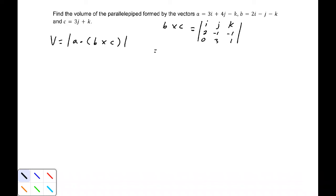So we'd have the minor matrix of -1, -1, 3, 1 times i, minus the determinant of the matrix 2, -1, 0, 1 times j, plus the minor matrix 2, -1, 0, 3 times k.